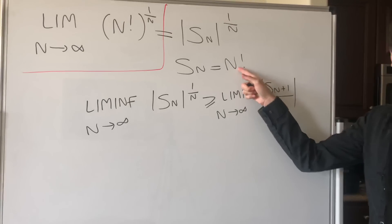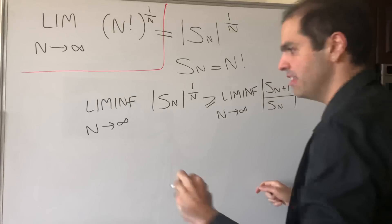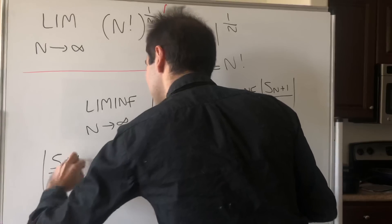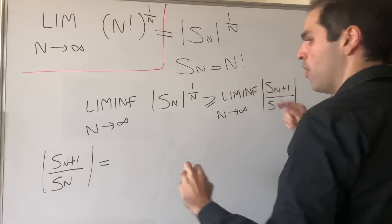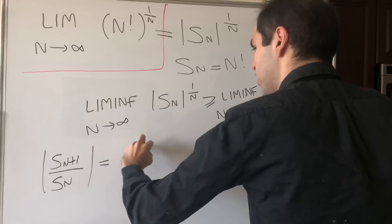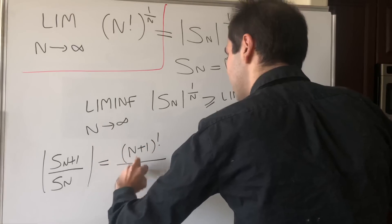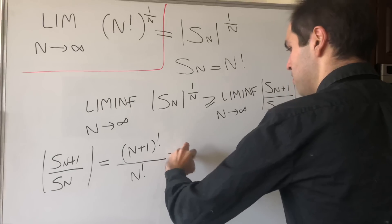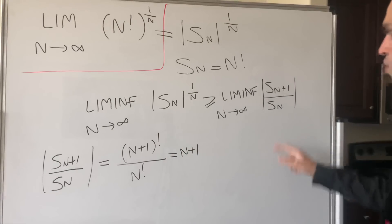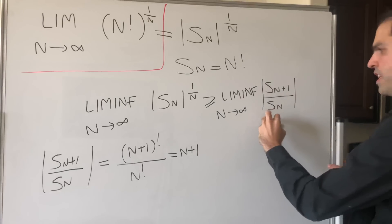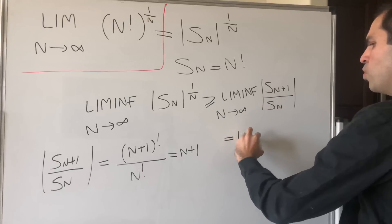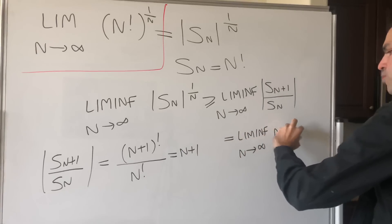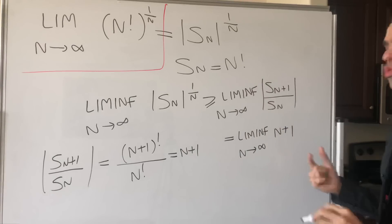Since S_n is just n factorial, let's calculate S_{n+1} over S_n. That becomes n plus 1 factorial over n factorial, but this just simplifies to be n plus 1. So in particular, this term here just becomes n plus 1, and so we're just taking the limit as n goes to infinity of n plus 1.